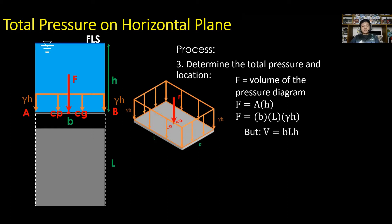But V, or the volume, is equal to B times L times H. This is the volume of the fluid above the surface. Thus, simplify the equation: F is equal to gamma times volume, which means that the force acting for horizontal plane surface is the weight of the fluid above.